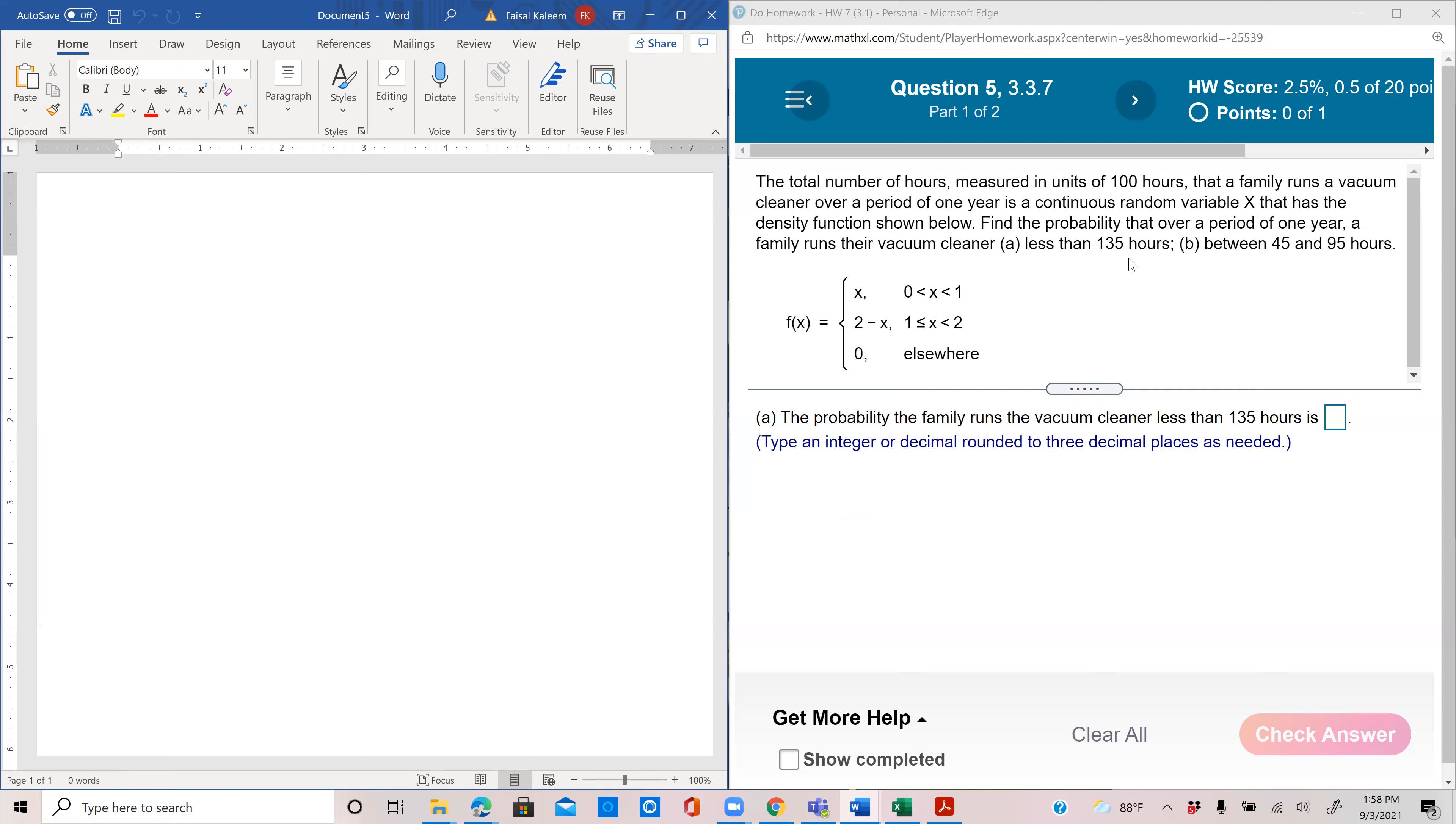We want less than 135 hours, so probability x less than 135 is equal to 0 to—less than 135 in this case. Technically less than 135 would mean negative infinity to 135.